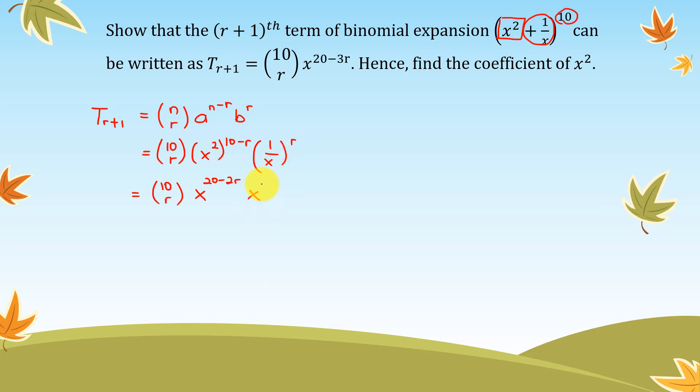So 1/x is simply x^(-1) to the power of r, so x^(-r). Since both of them are having the same base, we can actually simplify both of them. So (10 choose r) x^(20-3r).